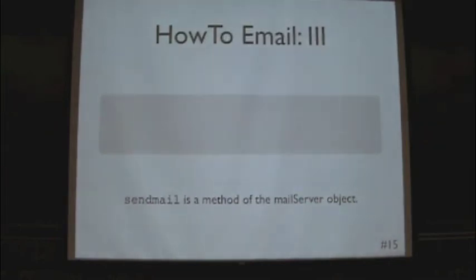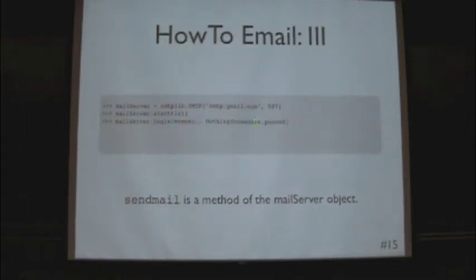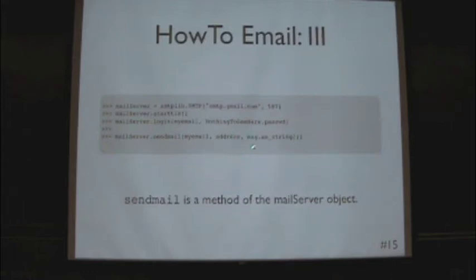Now we actually want to send it. We create a new object called the mail server — in this case connecting to Gmail. We know which port we want to talk to; this is a pretty standard port for the SMTP client. We start the authentication protocol — Gmail wisely won't just let anyone send emails from their server. We log in with the email address and the password, then from the server we just send the email with its address, format the message as a string, and close the connection to Gmail.